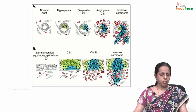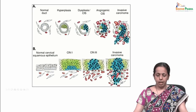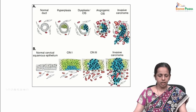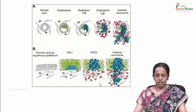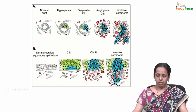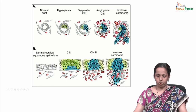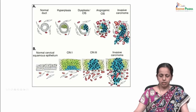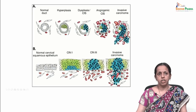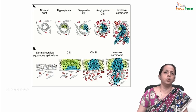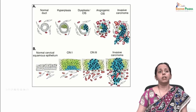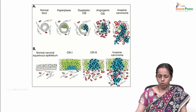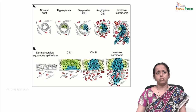In normal cervical squamous epithelium, the progression goes from CIN1 to CIN2 and then invasive carcinoma. There is a modest increase in new vessel density in CIN1, increased angiogenesis in CIN2, and abundant vessels in invasive carcinoma. The angiogenic switch represents a transition from vascular quiescence — where there is no vascularization — to sustained neo-vascularization. This transformation is clearly observable.